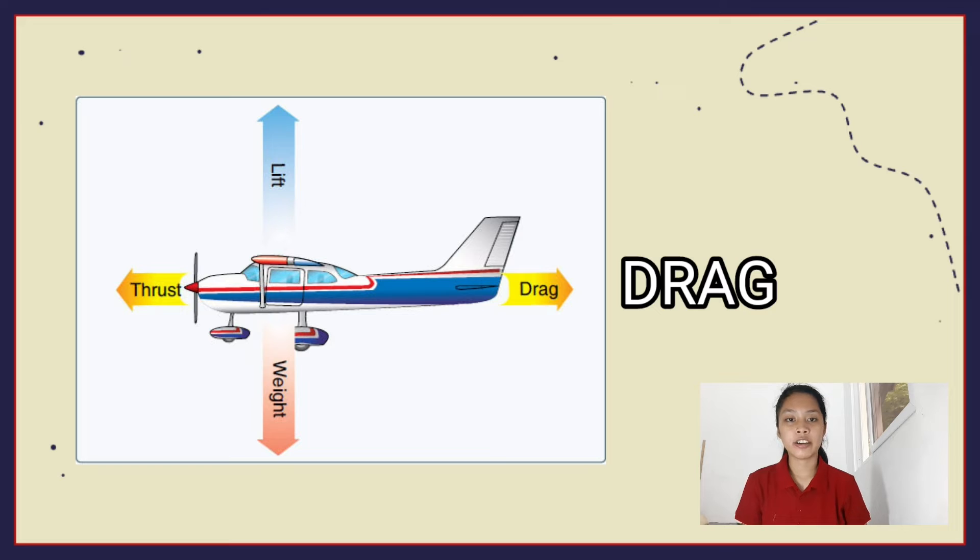The air resists the aircraft's motion, and this resistance is known as drag. The drag is directed in the opposite direction of flight. The shape of an aircraft, the stickiness of the air, and the aircraft's velocity are all factors that influence the magnitude of the drag force. Drag is generated by the aircraft's pressure center.